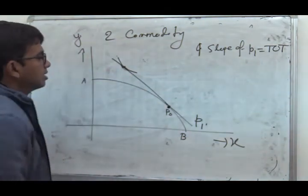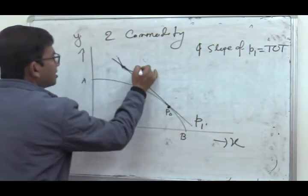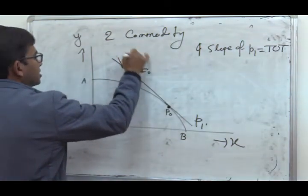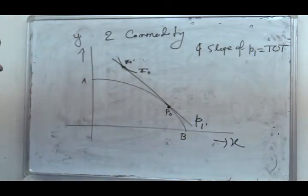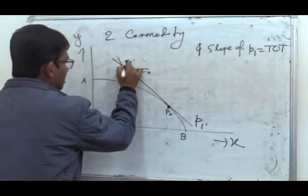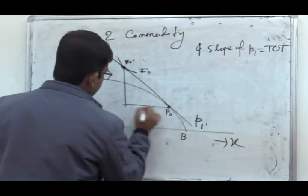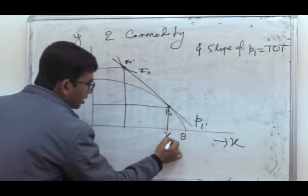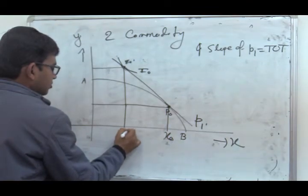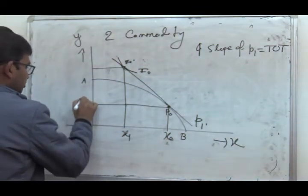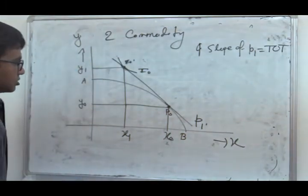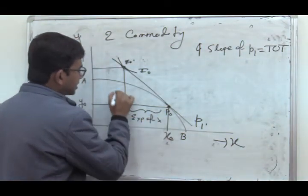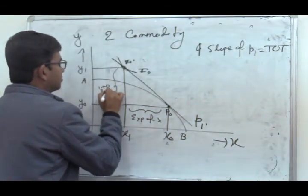The trade line P1 becomes the consumption possibility locus, and I0 is the indifference curve. E0 is the consumption equilibrium after trade. The country produces OX0 units of X and OY0 units of Y, consuming X1 units of X and Y1 units of Y. So X0 to X1 represents the export of X, and this is the import of Y.